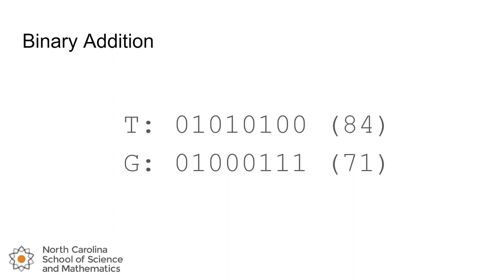T in ASCII corresponds to the number 84, or in binary 01010100. And G corresponds to the decimal number 71, which is 01000111 in decimal.